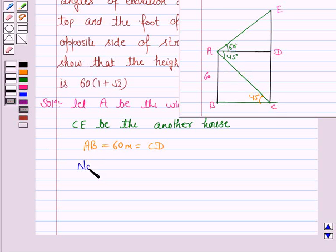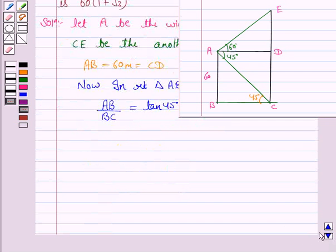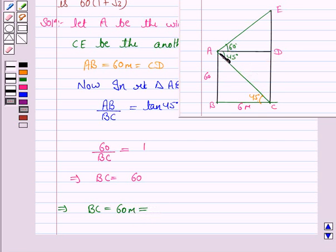Now in right triangle ABC, AB/BC (perpendicular/base) equals tan 45°. AB is 60, and tan 45° is 1. This implies BC equals 60. So this distance is also 60 meters, which means AD is also equal to 60 meters.